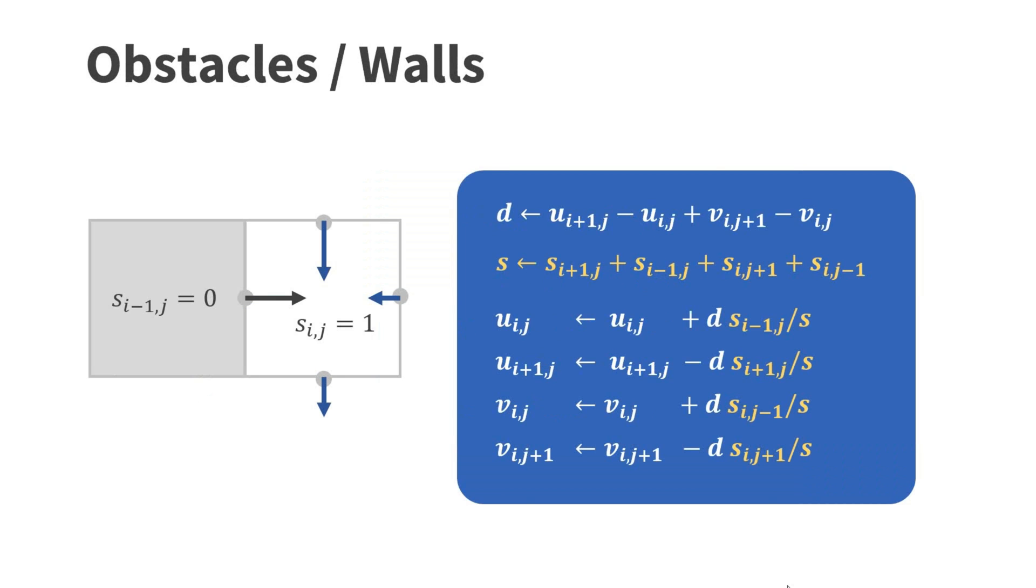To handle obstacles or walls, we assign a value s to each cell. We set the value to zero for solid cells and to one for water or air cells. Then, we add the yellow modification to the correction step.